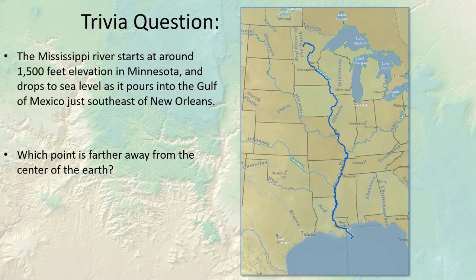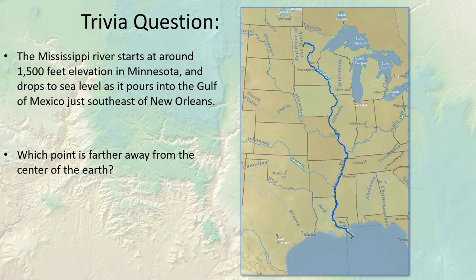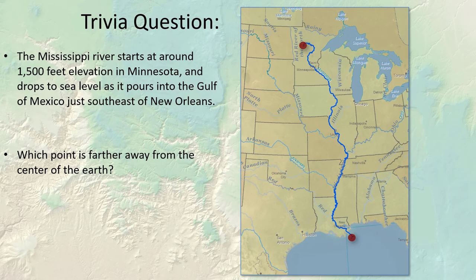Trivia question: The Mississippi River starts in Minnesota at about 1,500 feet elevation and flows down to the Gulf of Mexico. Which point is farther from the center of the earth — where it starts in Minnesota, or where it exits into the Gulf? The source is 3,956 miles from the center and the mouth is 3,960 miles — so the mouth is actually four miles farther from the center of the planet. The river gets further away from the center of the earth as it flows downhill.